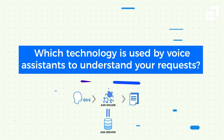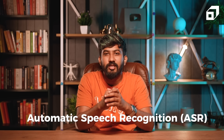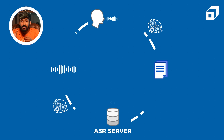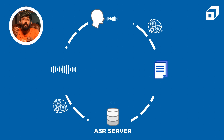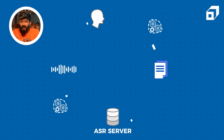Now let's move into the technological side of things. Which technology is used by voice assistants to understand your requests? Automatic Speech Recognition, or ASR, is the technology used to do exactly that. This technology is used for humans to interact with computer interfaces using their voices. When you make a request using speech, the speech gets converted to text, and that text is used by the system to search its database and find the information you requested.